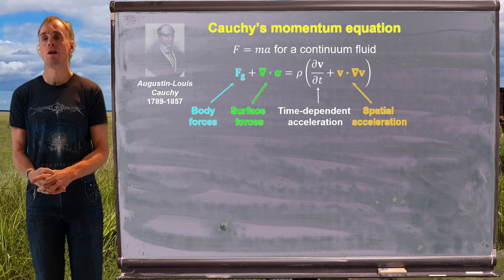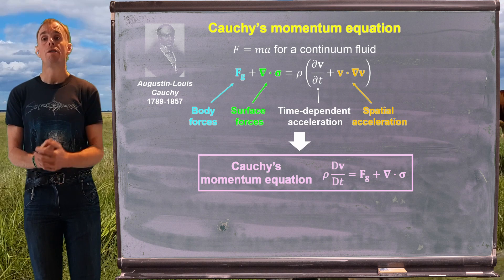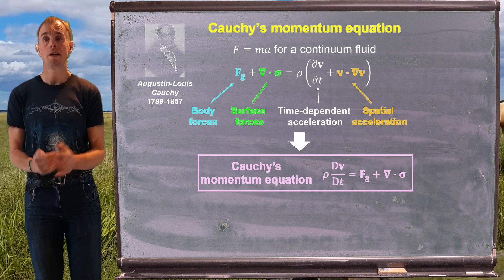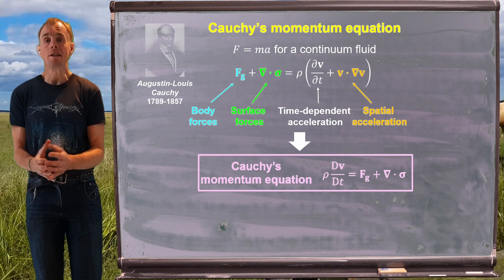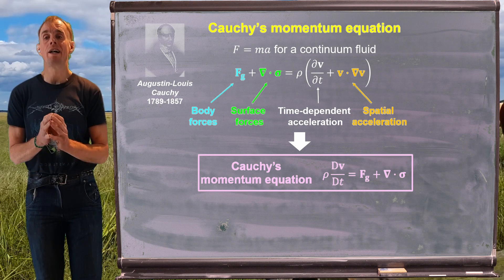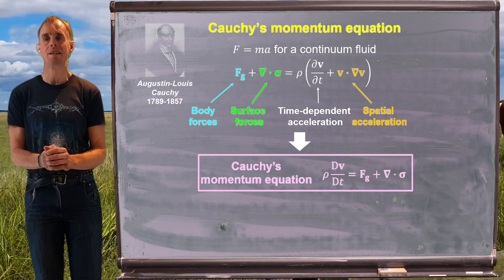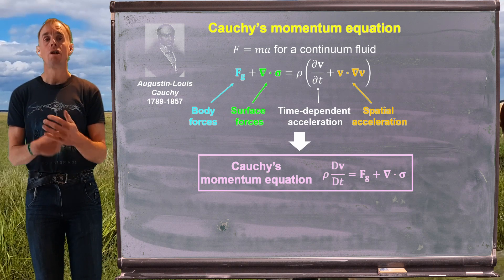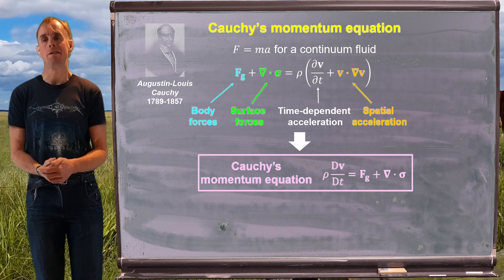And so here is Cauchy's momentum equation. Remember too, that those two acceleration terms inside the white brackets on the right-hand side can be condensed in terms of a substantive derivative, big D by big DT, which allows us to quantify time-dependent changes and spatially dependent changes.